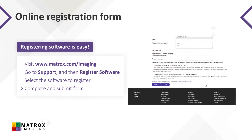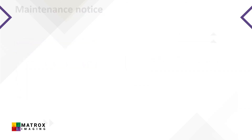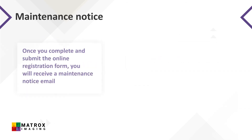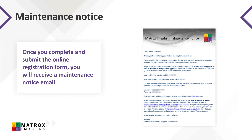Once you complete and submit the online registration form, you'll receive the maintenance notice email shown here. The email is sent to the email address entered on the registration form. On this form, you'll find important information such as the date your software maintenance will expire and the credentials for accessing the software update service.